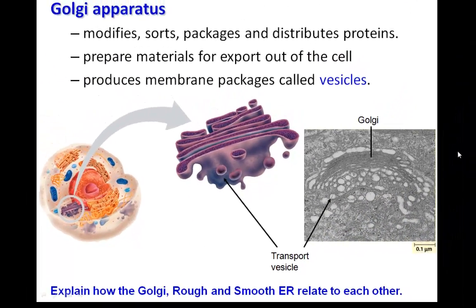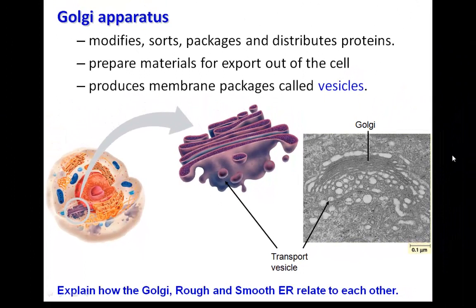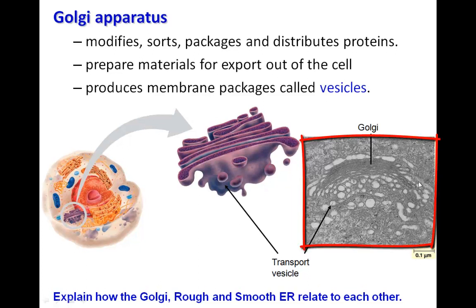The Golgi apparatus modifies, sorts, and packages, and then distributes the proteins that come from the ER. They prepare materials for export out of the cell as well, so not all materials just stay within the cell. And finally, those packages that they produce are called vesicles. Here you can see what looks like a stack of pancakes, and that's really the general structure of the Golgi apparatus.